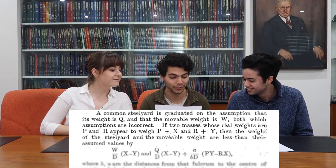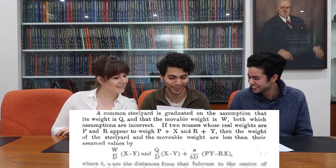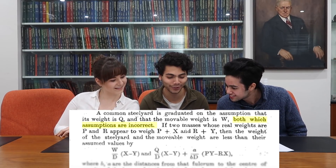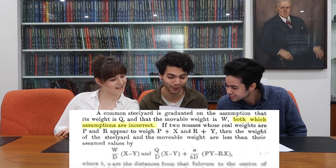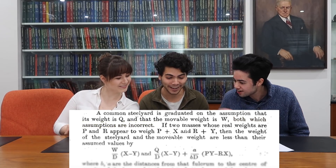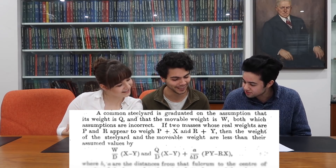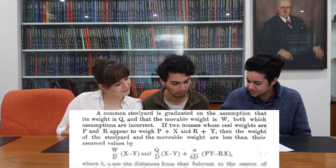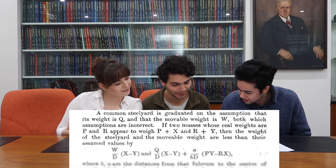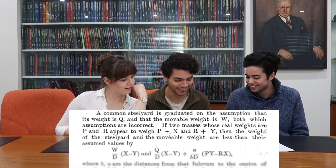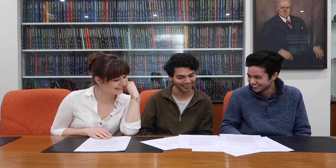The reversible end... the Carnot cycle. Here's a good one — a common steelyard is graduated on the assumption that its weight is Q and that the movable weight is W, both of which assumptions are incorrect. I know less than I started with at the beginning of the question. What's a steelyard? The words are throwing me. What's an uncommon steelyard? What's a common steelyard?